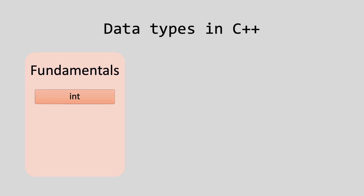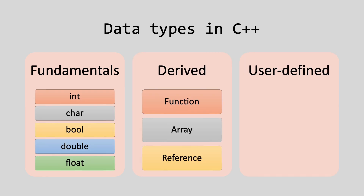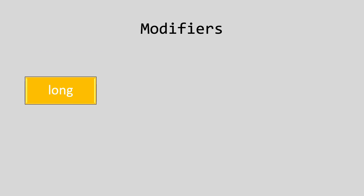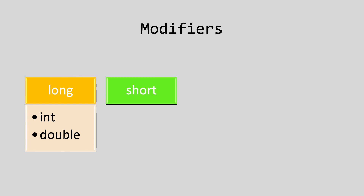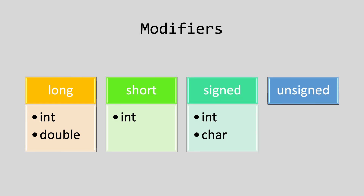Understand data types. C++ encompasses fundamental, derived, and user-defined data types. Learn about type modifiers — modifiers in C++ are employed to alter or provide additional significance to pre-existing data types.